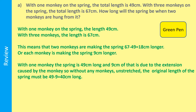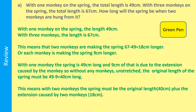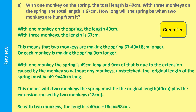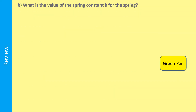Now we know the original length of the spring and the extension caused by each individual monkey. So with two monkeys, the spring must be the original length 40 centimetres plus the extension caused by two monkeys — 9 centimetres each, 18 centimetres in total. So with two monkeys the length is 40 plus 18 equals 58 centimetres.